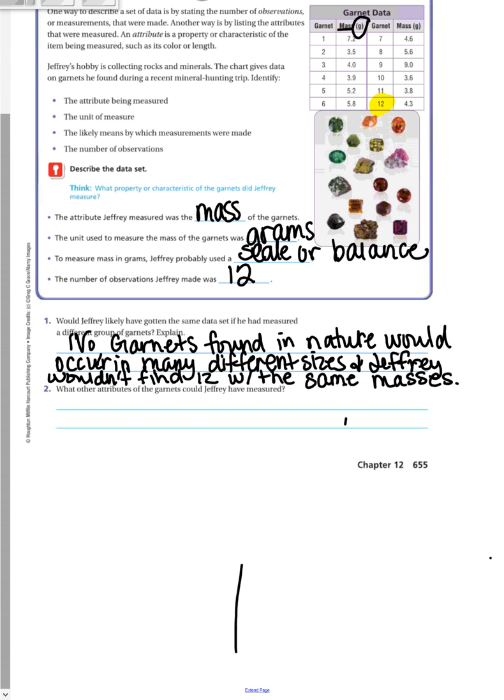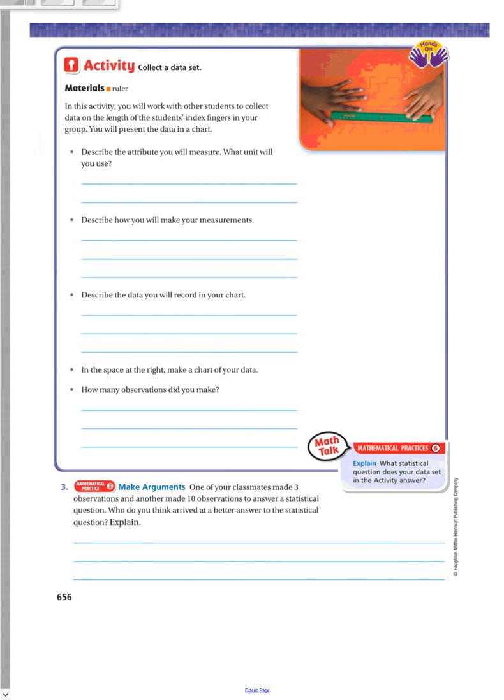Number two. What other attributes of the garnets could Jeffrey have measured? Possible answers could be he could have measured the length of the rocks and minerals, the color, the brightness of them, or how hard the rocks were.